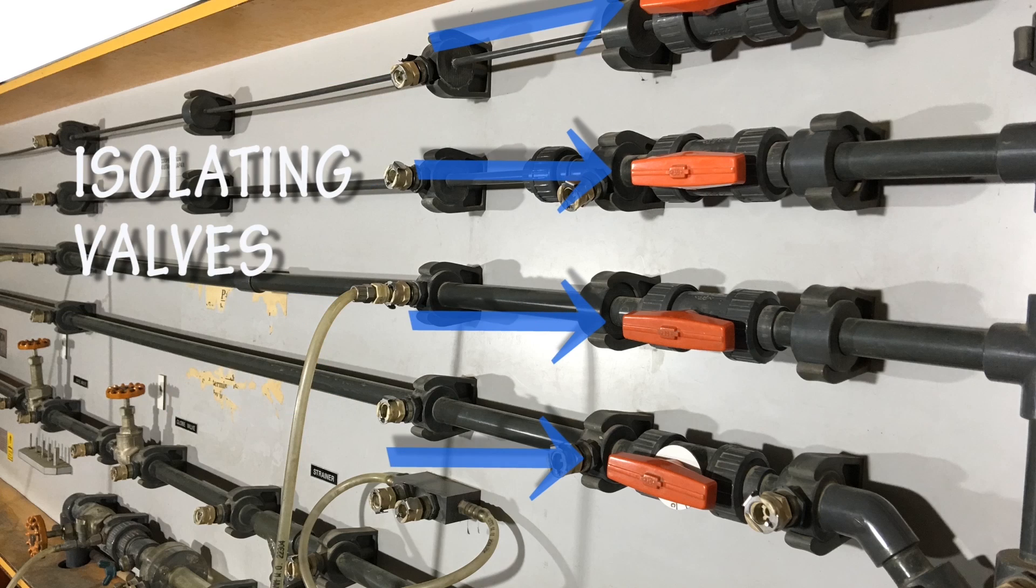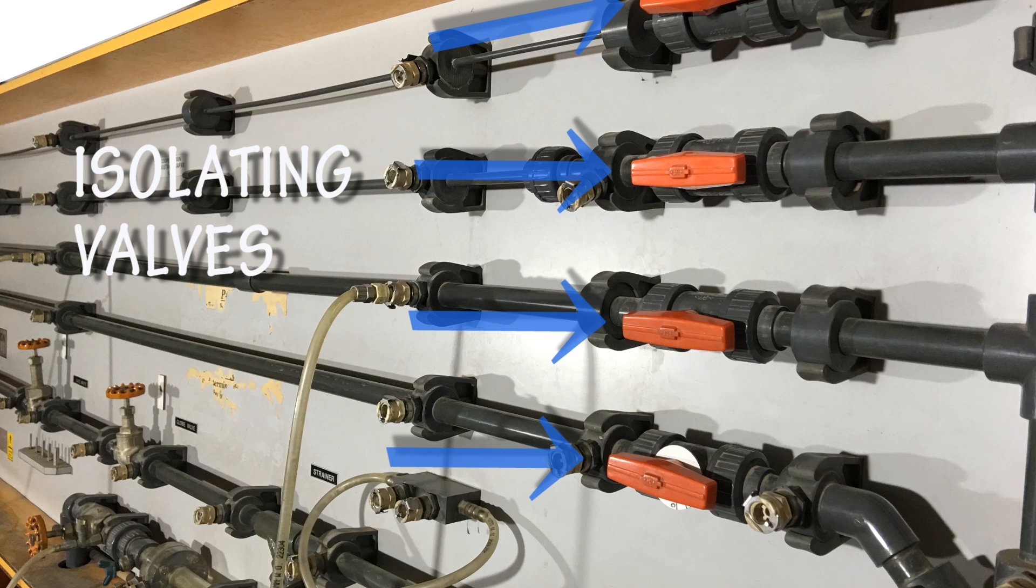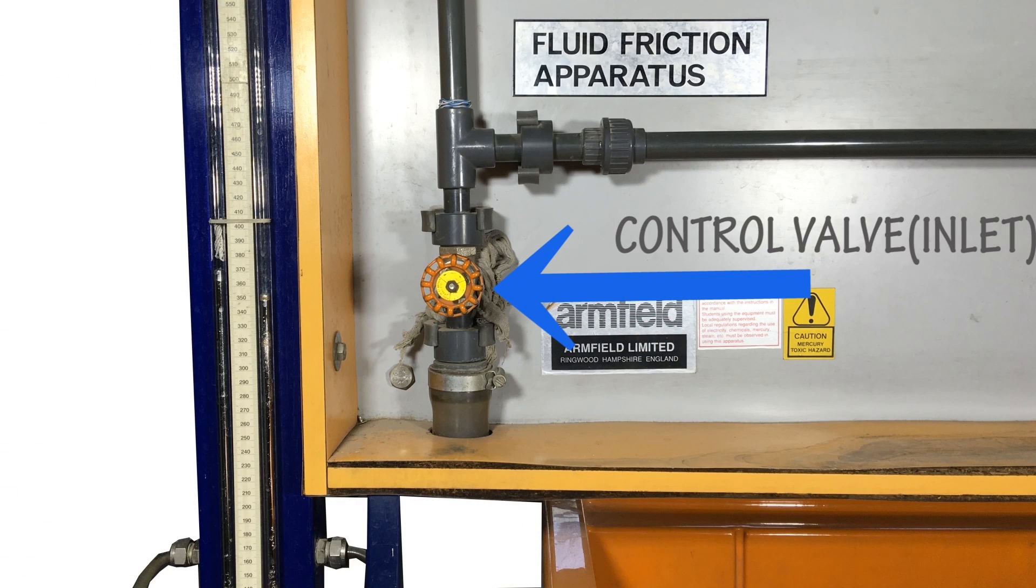The isolating valves, which are used to control the flow of water through these pipes. The first main inlet control valve, which lets water into this whole apparatus.